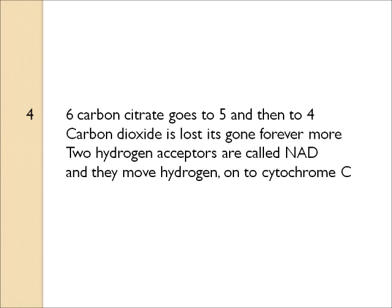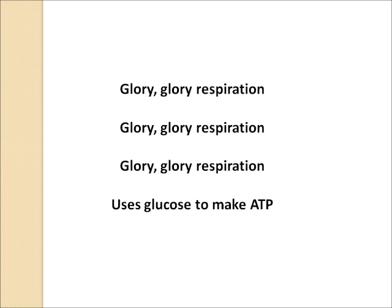Six carbon citric goes to five and then to four — carbon dioxide is lost, it's gone forevermore. Two hydrogen acceptors are called NAD and they move hydrogen onto cytochrome C.